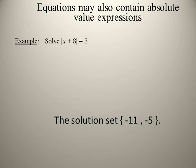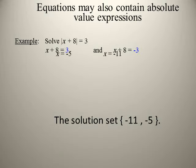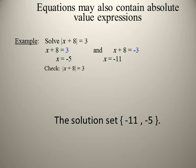Solve |x + 8| = 3. That means x + 8 = 3 or x + 8 = −3. First equation: x = −5. Second: x = −11. Check: |−5 + 8| = |3| = 3 ✓, and |−11 + 8| = |−3| = 3 ✓. The solution set is {−5, −11}.